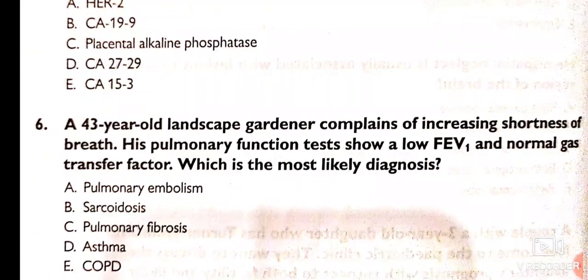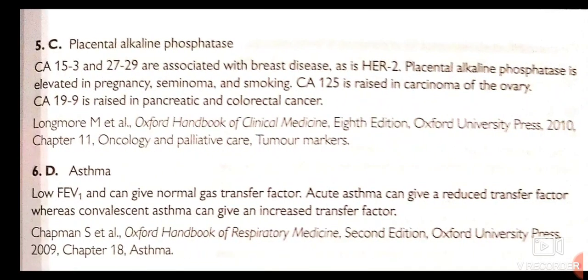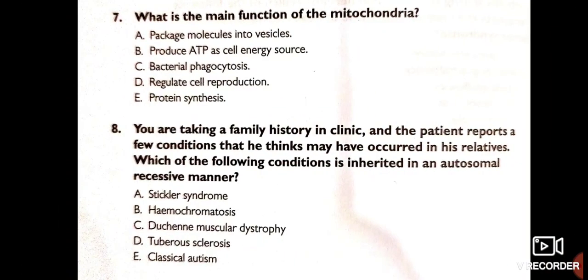A 43-year-old landscape gardener complains of increasing shortness of breath. His pulmonary function test shows a low FEV1 and normal gas transfer factor. The most likely diagnosis is asthma. CA 15-3 and CA 27-29 are associated with breast disease; placental alkaline phosphatase is elevated in pregnancy, seminoma, and smoking; CA 125 is raised in carcinoma of the ovary; CA 19-9 is raised in pancreatic and colorectal cancer. In asthma, a low FEV1 can give a normal gas transfer, whereas acute asthma gives reduced transfer factor and chronic asthma can give increased transfer factor.